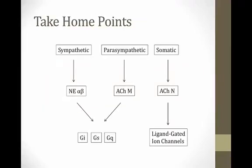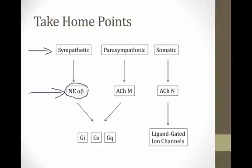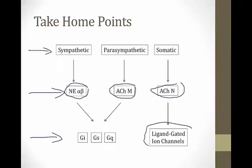In summary: start with the big picture — sympathetic (fight or flight) versus parasympathetic (rest and digest) versus somatic, and what each system does. Then drill down: sympathetic largely uses norepinephrine on alpha and beta receptors; parasympathetic largely uses acetylcholine on muscarinic receptors; somatic uses acetylcholine on nicotinic receptors. At the smallest level, nicotinic receptors use ligand-gated ion channels, while sympathetic and parasympathetic systems use GI, GS, and GQ protein second-messenger systems. That concludes our module on the autonomic nervous system.